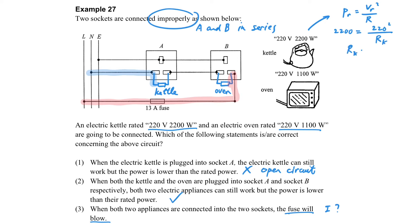By P equals V squared over R, then we can find the resistance of the kettle. And with the similar way, we can find out the resistance of the oven also. Now, we can find the current by using V equals IR.